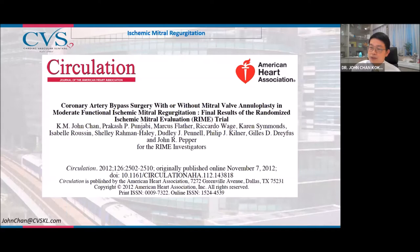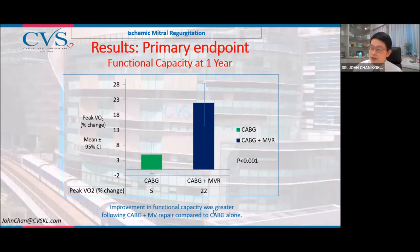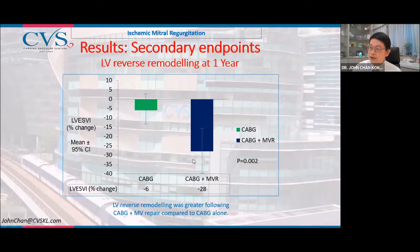A study looked at whether we should repair moderate ischemic mitral regurgitation at the time of coronary bypass graft surgery. It showed that patients who had valve repair plus bypass grafting had better functional capacity — peak oxygen consumption improved by about 20% — and the left ventricle became smaller more significantly in those who had both bypass plus mitral valve repair, compared to bypass surgery alone.